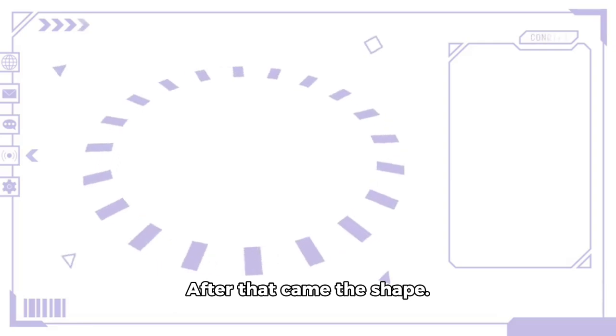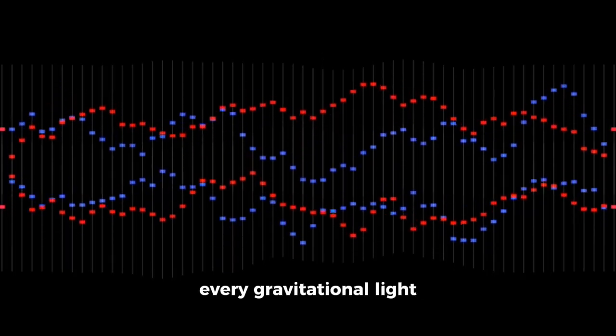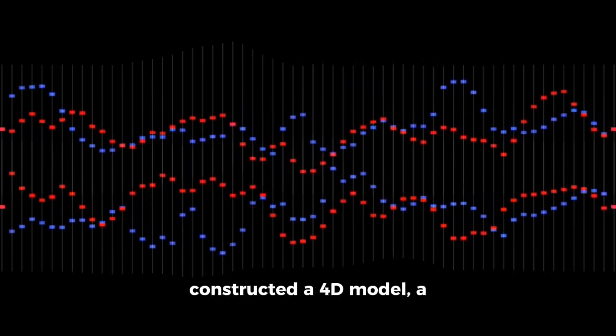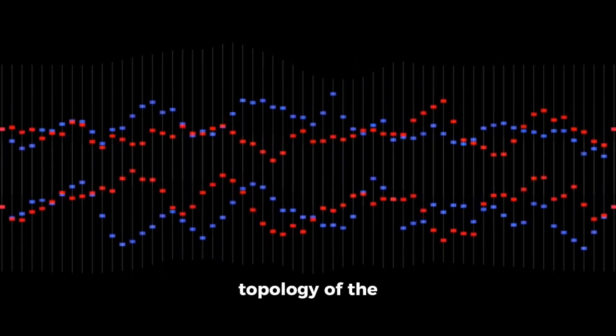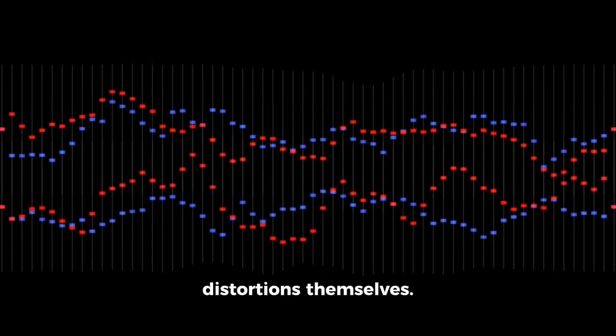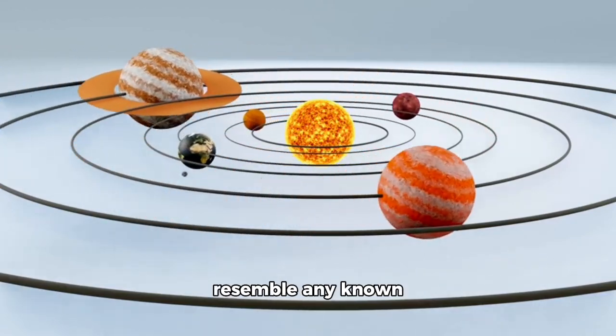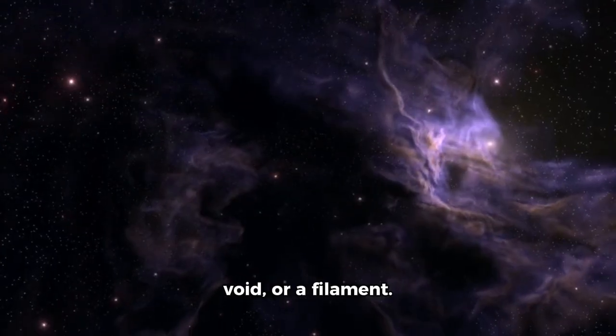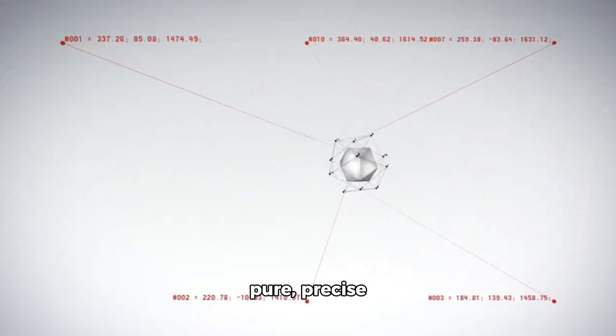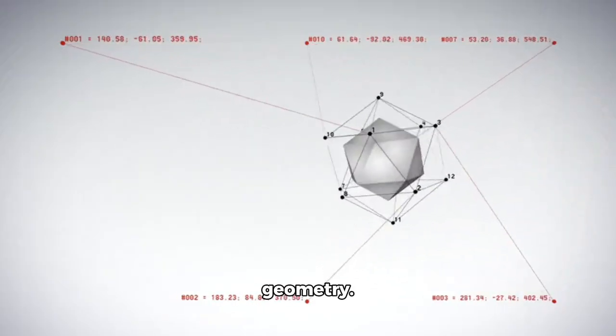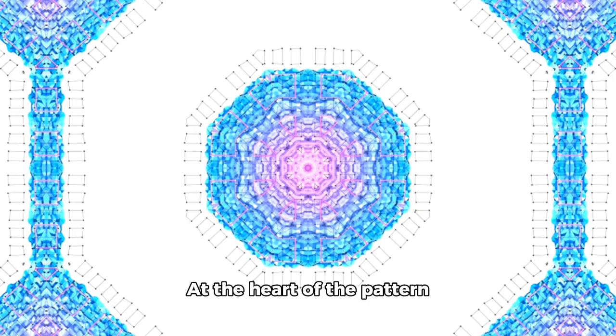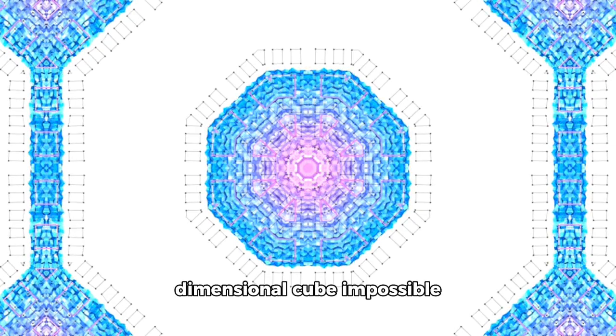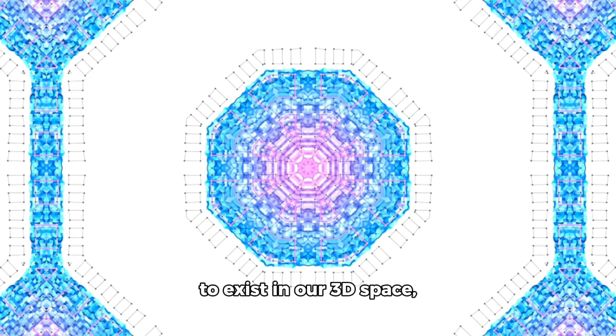After that came the shape. When Google's AI covered every gravitational light curve, anomaly, and numerical pattern, it constructed a 4D model, a topology of the distortions themselves. What it produced did not resemble any known astronomical structure. It wasn't a nebula, a void, or a filament. It was geometry. Pure, precise geometry. At the heart of the pattern appeared to be something strangely resembling a tesseract, a four-dimensional cube impossible to exist in our 3D space, yet somehow reflected in the gravitational data. The AI rendered it as a pulsating hyper-object, folding and unfolding across light frequencies.